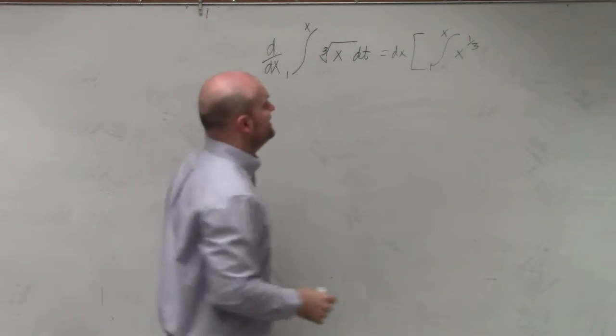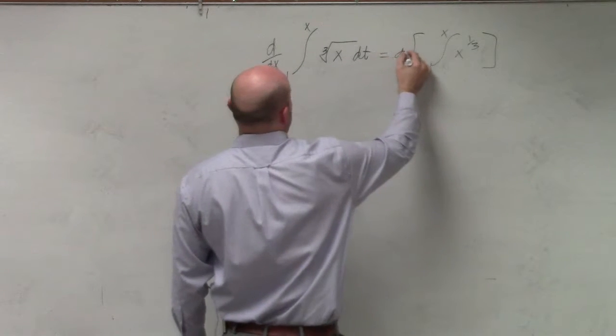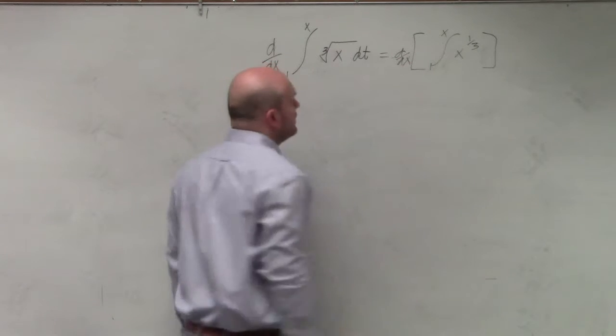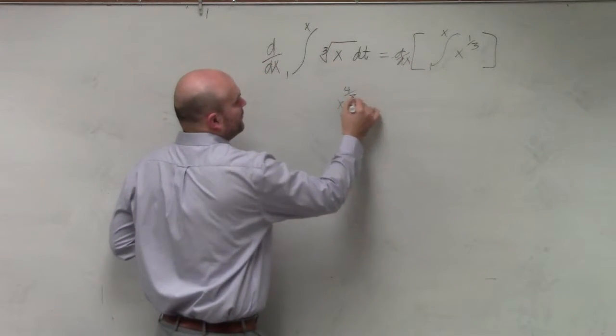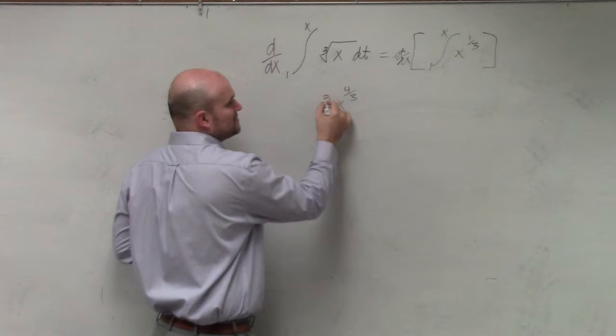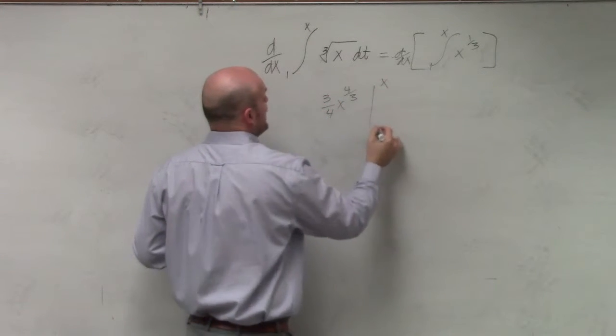Therefore, I can add 3 over 3, which is going to give me x to the 4/3, and then divide by 4/3, which is the same thing as multiplying by 3/4, and then I'm going to evaluate from x to 1.